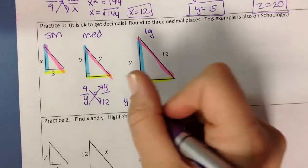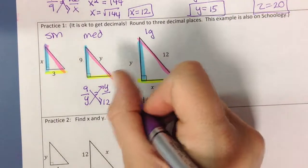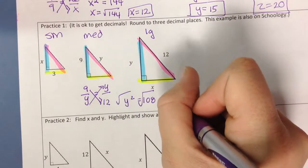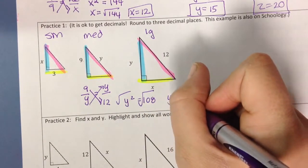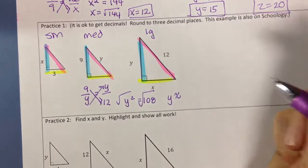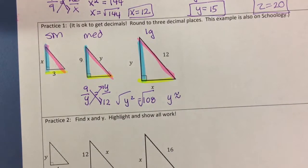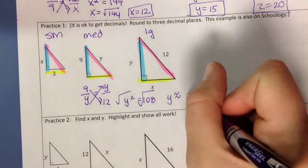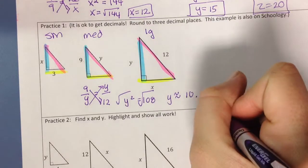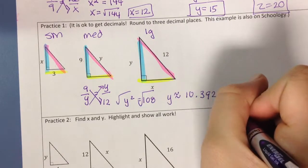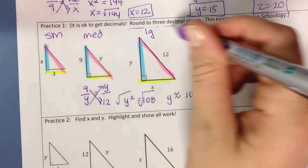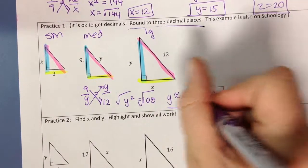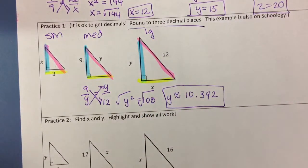Alright, now I'm going to take the square root of both sides. And this time I will get a decimal. So y is approximately, let's see, y is approximately the square root of 108, which in my calculator is about 10.392. And in the directions it does say round to three decimal places. So we want to round to three decimal places. 10.392.